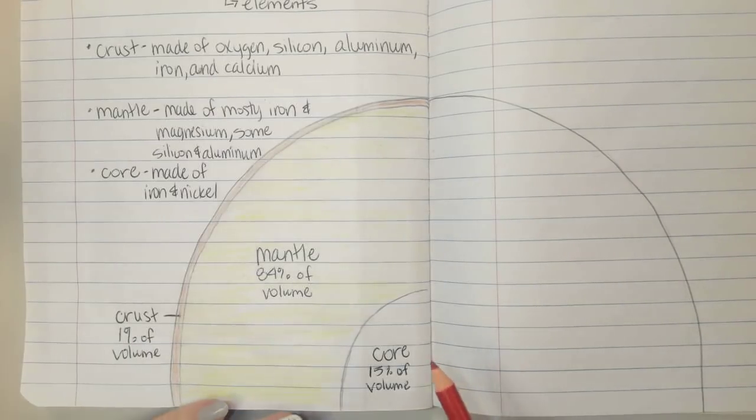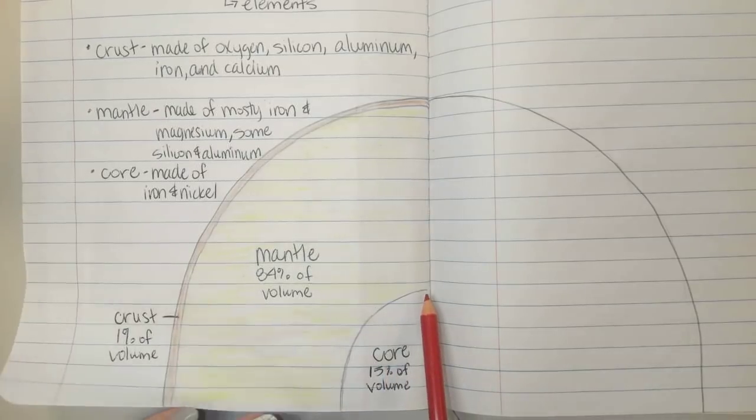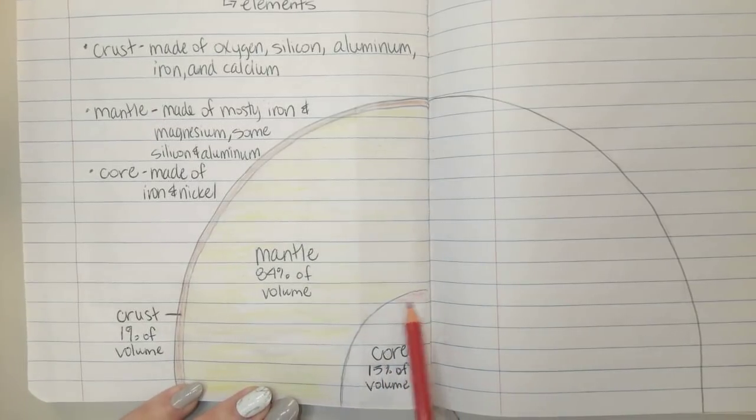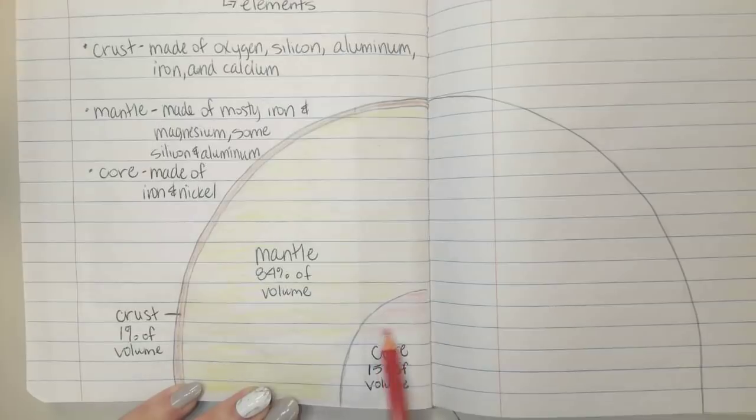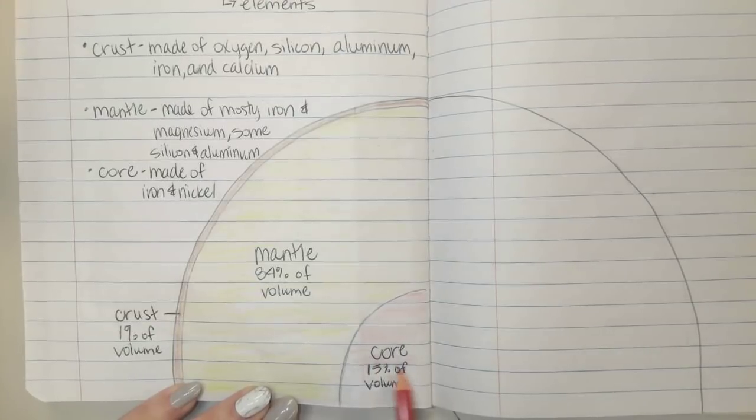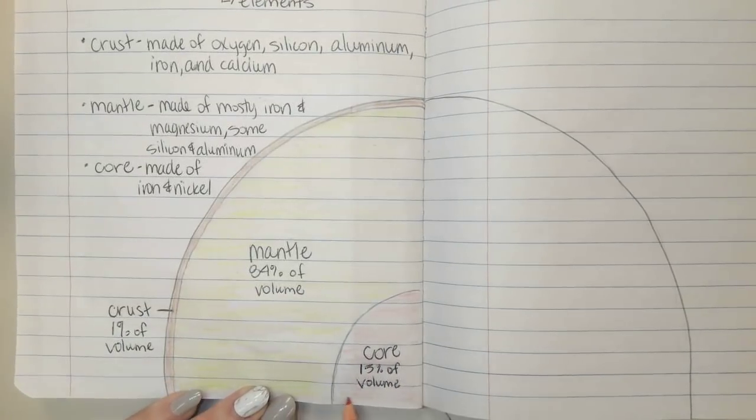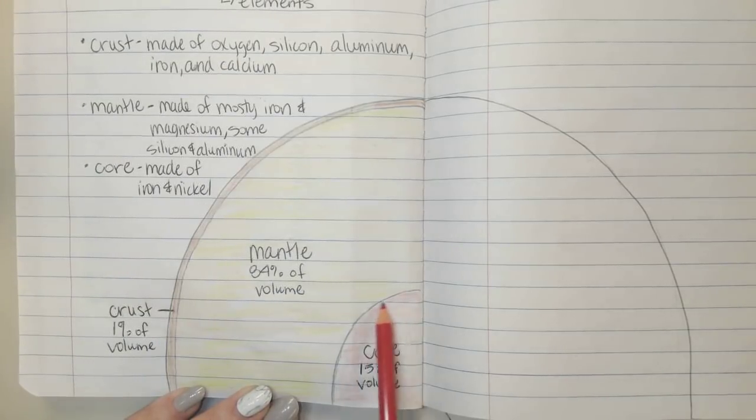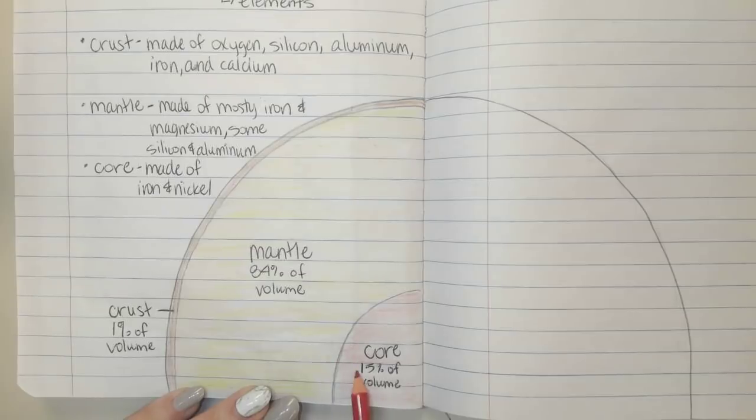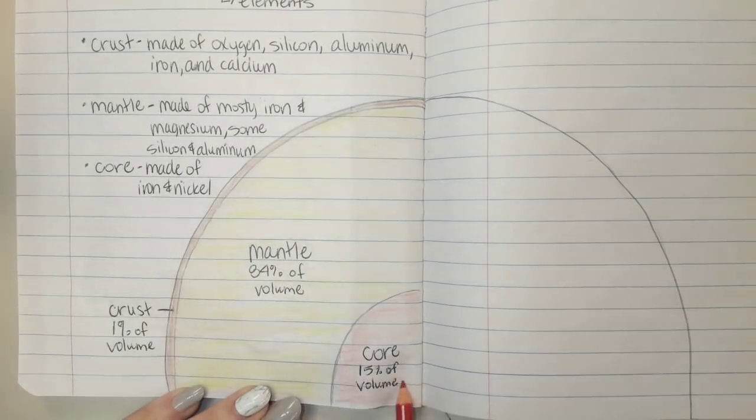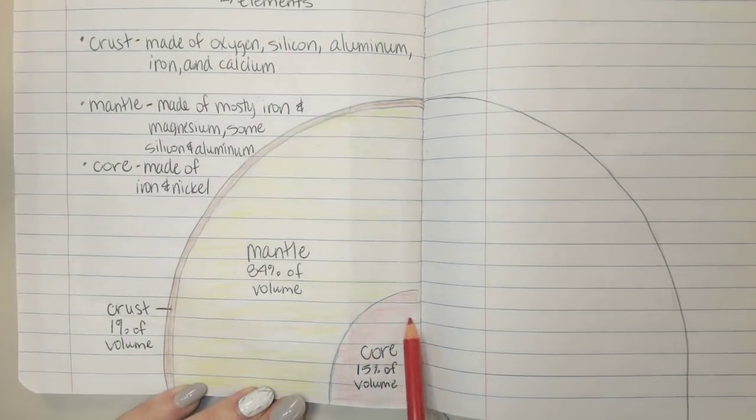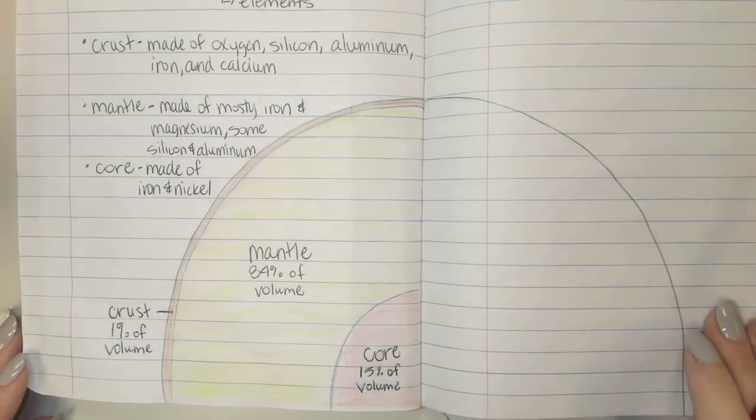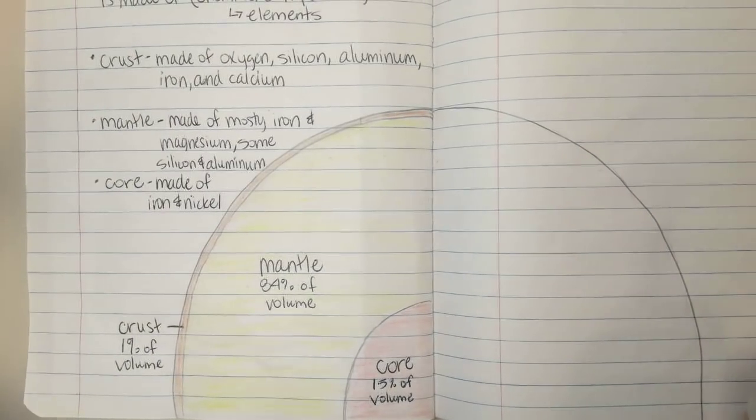I'm going to go ahead and color the core red. This doesn't have to be perfect. The color is just kind of helpful when looking at the different layers. And there are your notes for page 2.